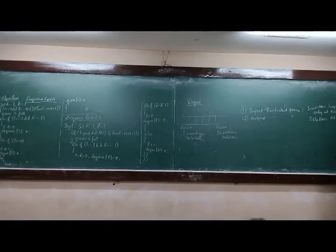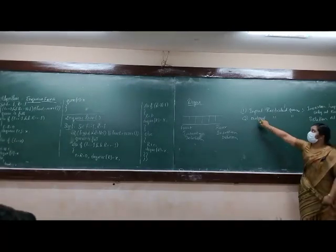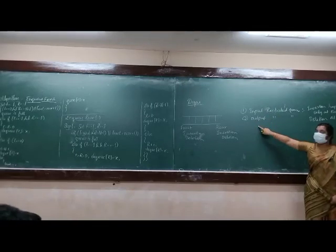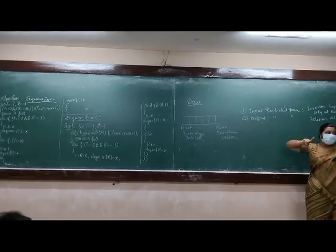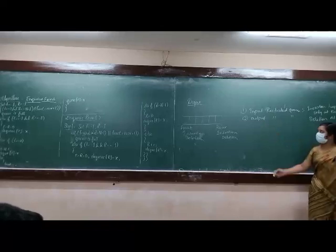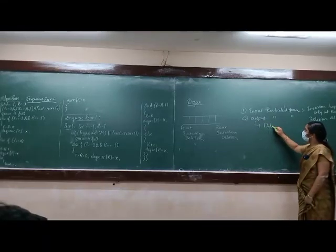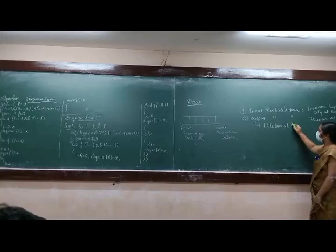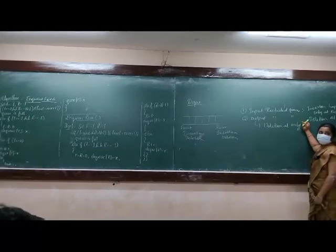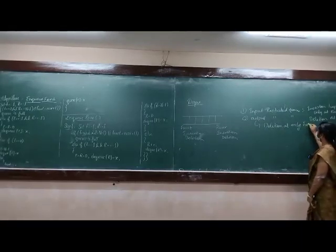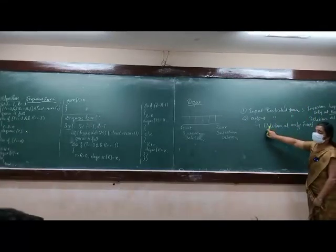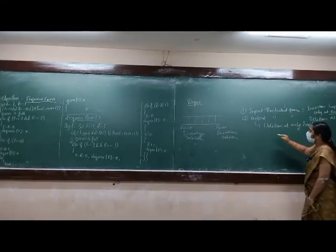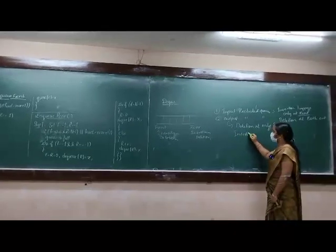Then what is output-restricted deque? Input contains insertion, output contains deletion. Output restricted to one thing: deletion happens only at one end, but insertion happens at both ends. Deletion at only the front end. In the output-restricted deque, deletion at only the front end, and insertion at both ends.